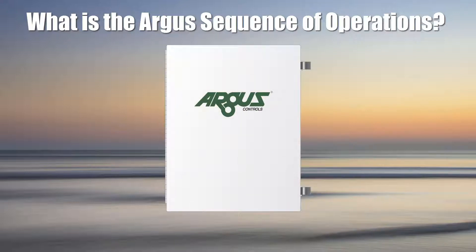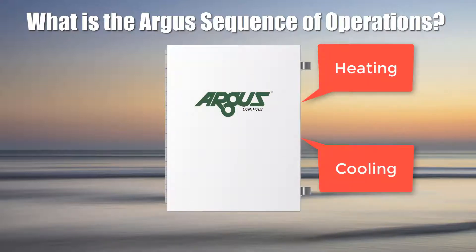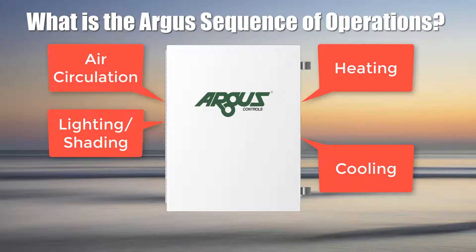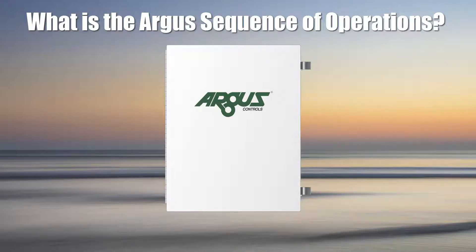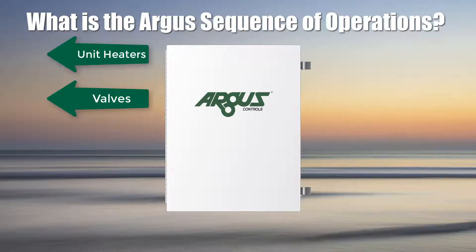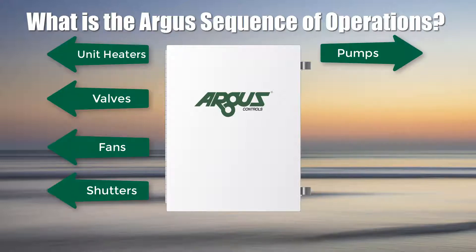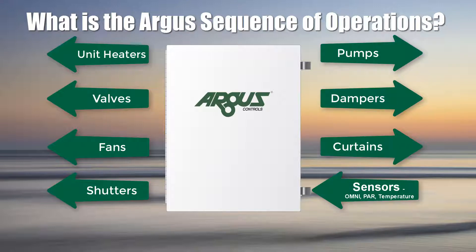Various areas included in the sequence of operations: heating, cooling, air circulation, lighting, irrigation, and so on. Some examples of equipment controlled by Argus include unit heaters, valves, fans, shutters, pumps, dampers, curtains, sensors, omni, PAR, temperature sensors, and lights.